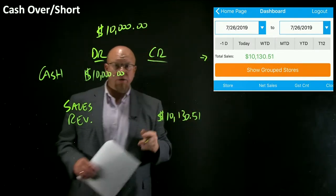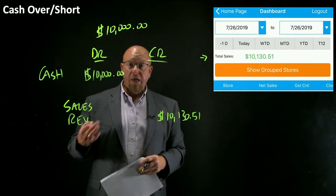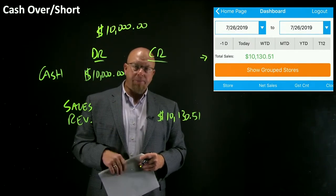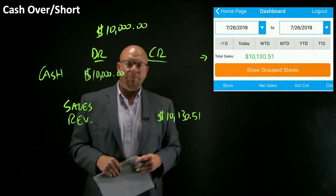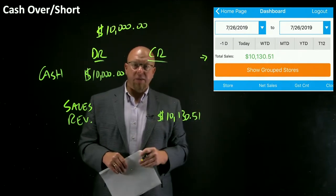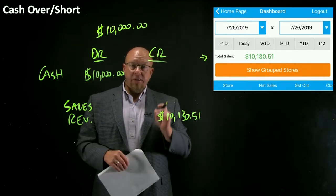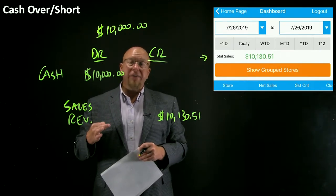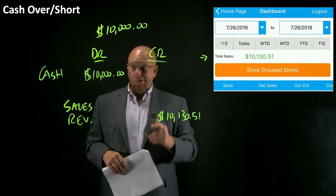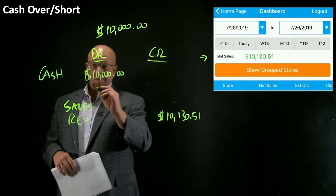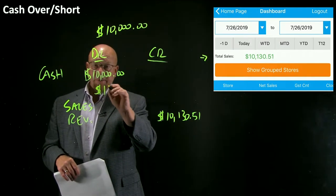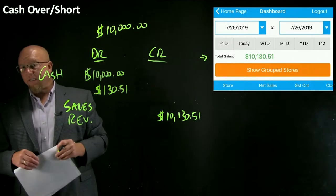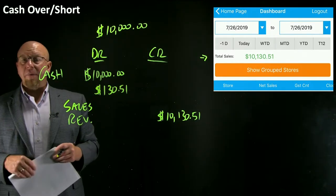After all, that's what our cashiers rung into the point of sale system. So we've got a little problem here — debits are $10,000, credits are a little over $10,130. This journal entry does not balance, and a bookkeeping system will not allow you to even save it. So what you're seeing is we need something debited in the amount of $130.51 just to make this journal entry balance.